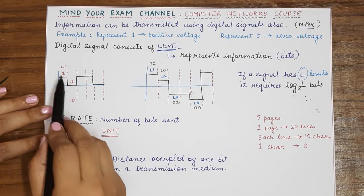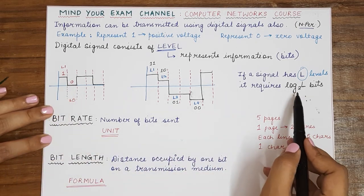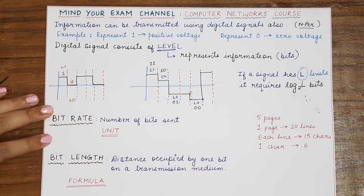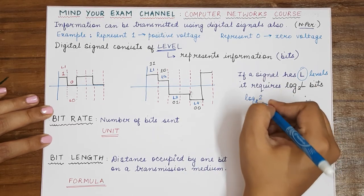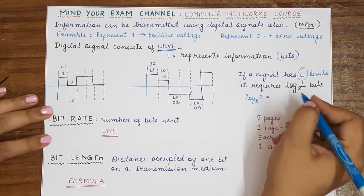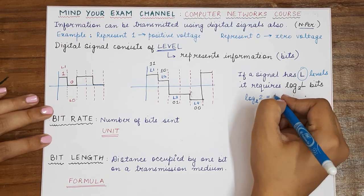So in this case, we had two levels. So log two base two was equal to one. So L is two, we have two levels. So how many bits will be represented in each level? One bit.